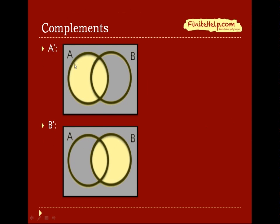A complement would be everything that's not in A. So here you can see the shaded area, which is everything that's not in A, but in the rectangle. And here the same way for B prime, which is everything that's not in B.